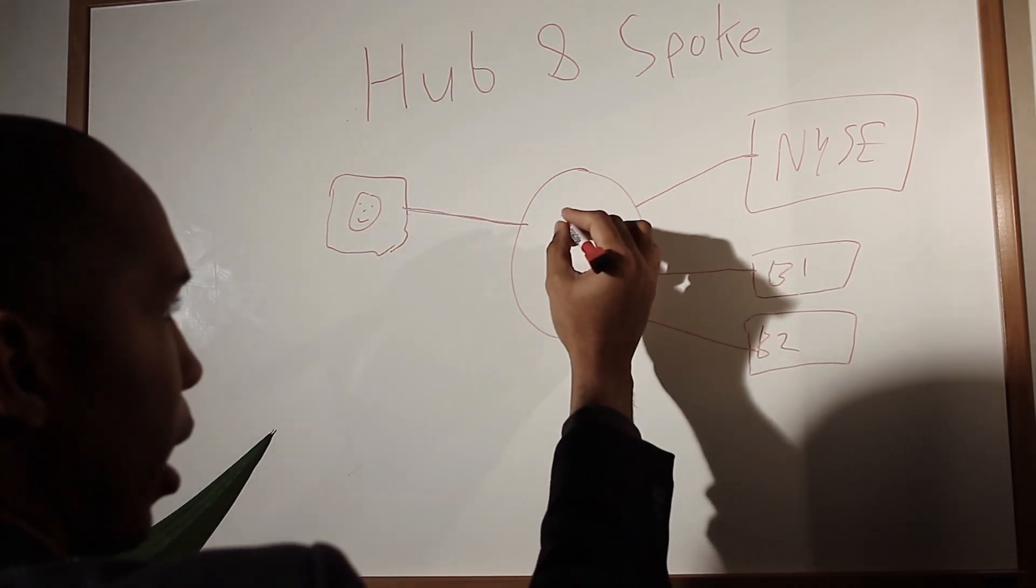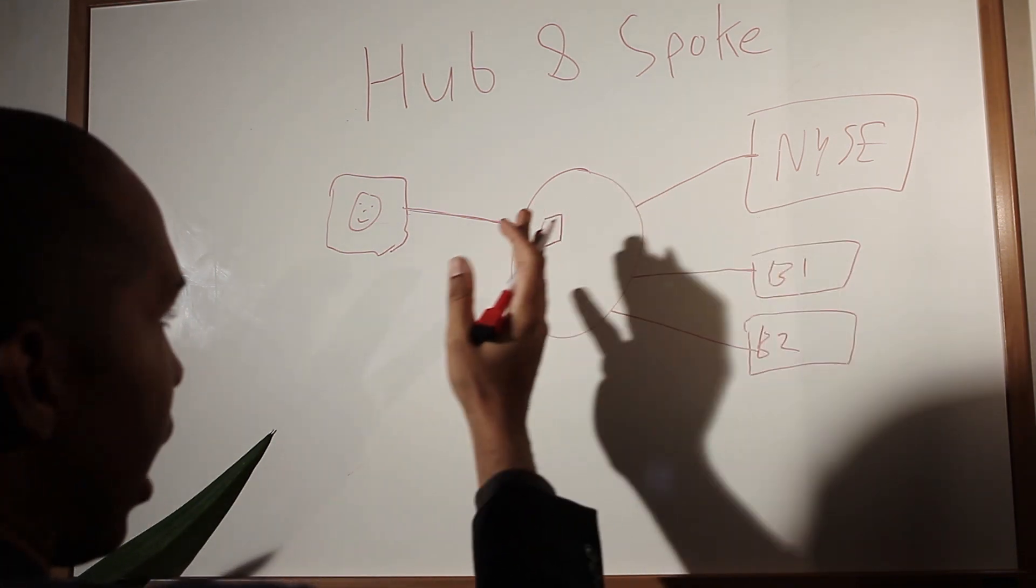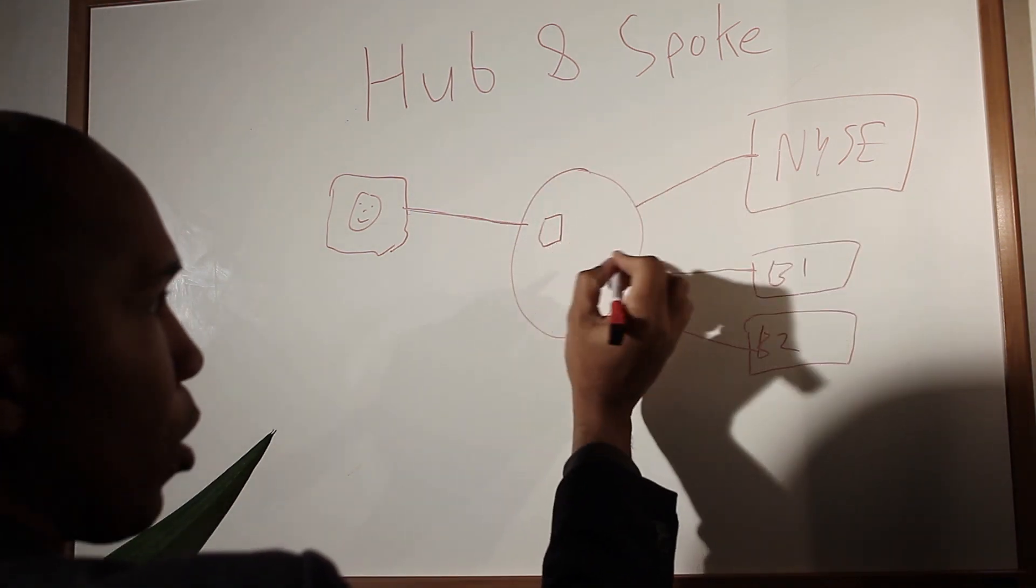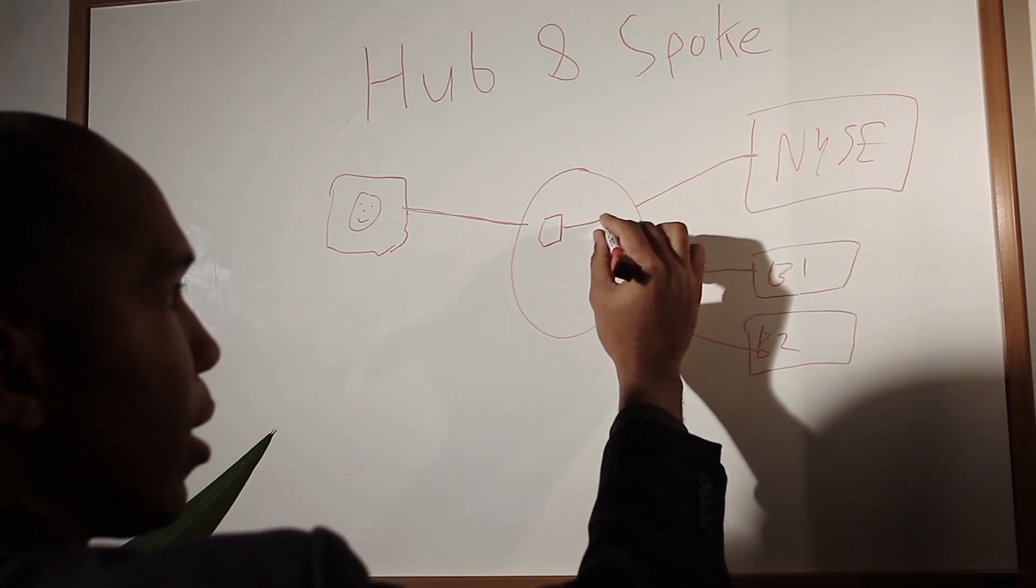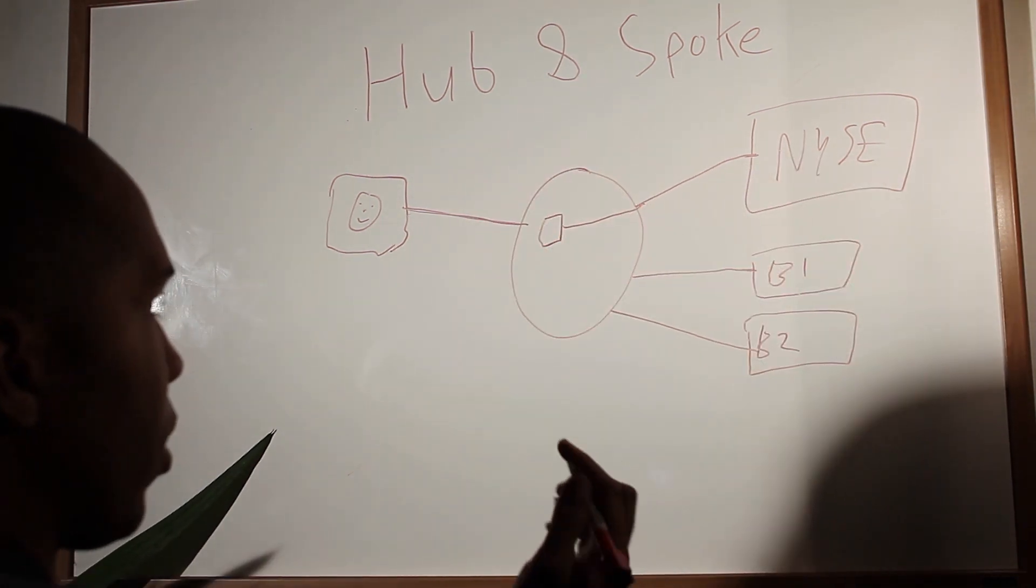And in here, they have some kind of a FIX engine that's going to accept my order. And it's going to look at the tag like x destination, for example. So I have 100 equals NYSE. So okay, 100 equals NYSE. Alright, that order needs to be routed out to New York Stock Exchange. So it goes ahead and sends it out via the New York Stock Exchange connection that the hub has.